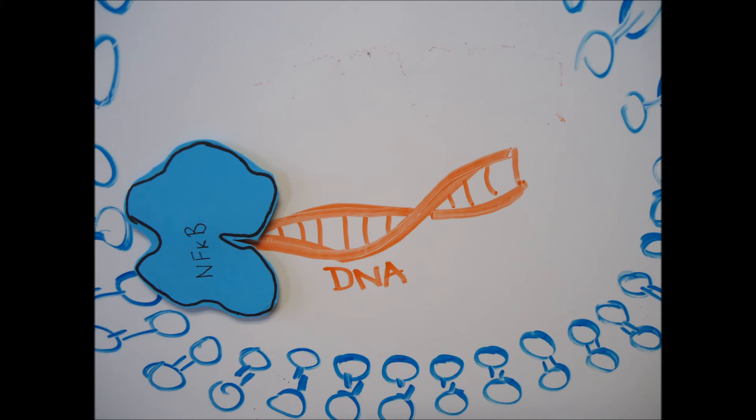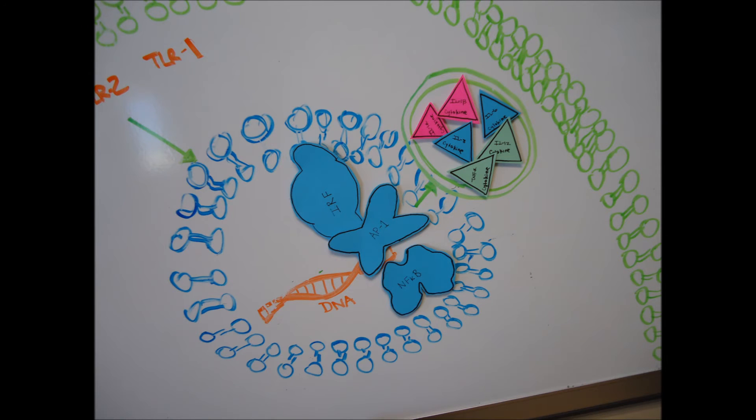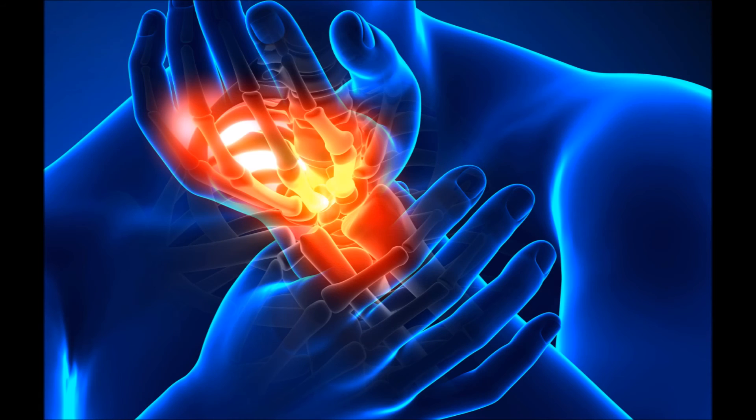When NFKB binds to a DNA strand, this signals DNA to transcribe different messengers that will send out an immune response causing inflammation.